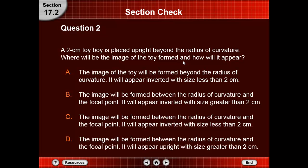Question number 2: a 2 cm toy is placed upright beyond the radius of curvature. Where will the image of the toy form and how will it appear? Option A: the image will form beyond the radius of curvature, appearing inverted with size less than 2. Option B: the image will form between the radius of curvature and the focal point, appearing inverted with size greater than 2. Option C: the image will form between the radius of curvature and the focal point, appearing inverted with size less than 2.